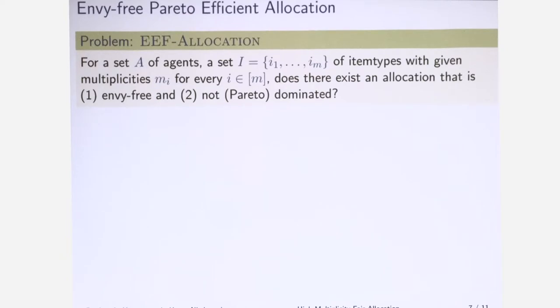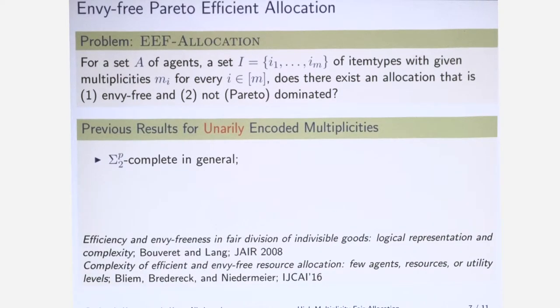So what is known about this envy-free Pareto efficient allocation problem? Here we have a formal definition. It basically says that we are looking for an envy-free allocation that is also Pareto efficient, so not Pareto dominated. There are at least two papers I would like to mention. These papers are actually dealing with items encoded when the multiplicities are encoded in unary. In general, this problem is Σ₂ᵖ-complete. You can hope for doing better having some constrained instances, but unfortunately you cannot.